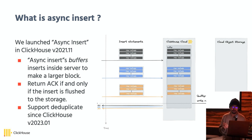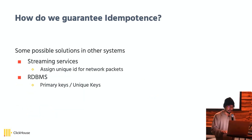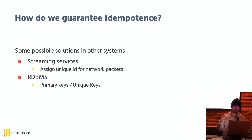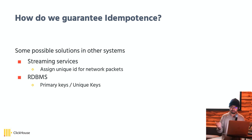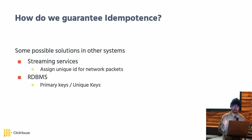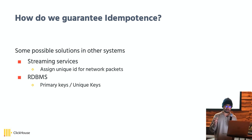You may ask: what is the deduplication for async insert, and why is it important? In some cases, we may encounter IO errors. For example, when the network is unstable and you receive a timeout on the client side, you don't know if your insert was successful or not. At that point you will retry — but if you do nothing, you might insert the same data twice, which is not what we want.